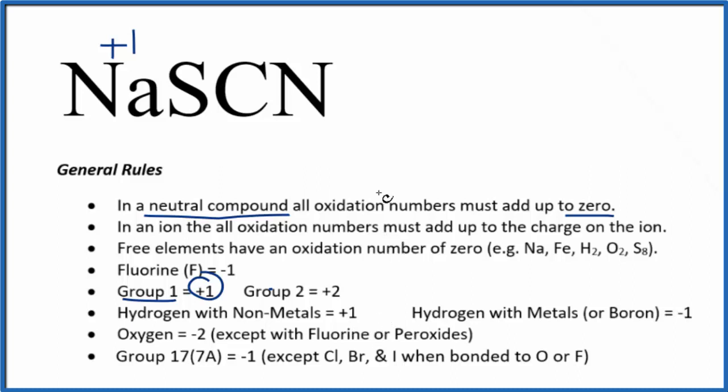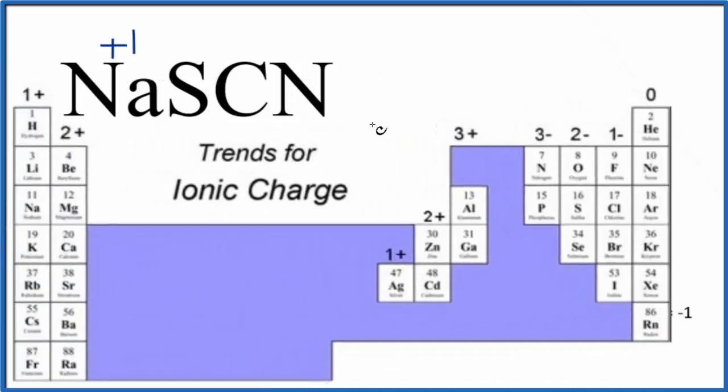There is one way we can deal with this, and that's to give the most electronegative element the charge that it would have when it's an ion. If we look at the periodic table, nitrogen is the most electronegative element here. So nitrogen, we're going to use its charge, 3 minus. The oxidation number is going to be minus 3.